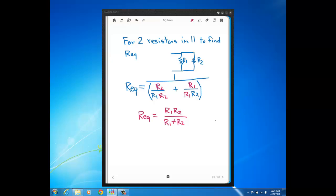So for two resistors in parallel, instead of doing sum of reciprocals reciprocated, you can do product over sum.